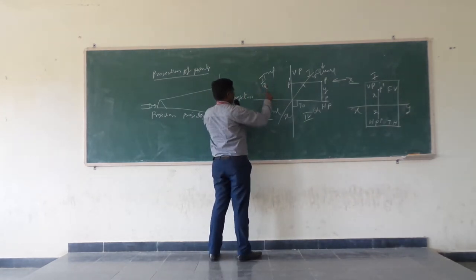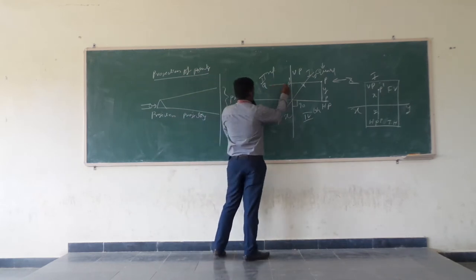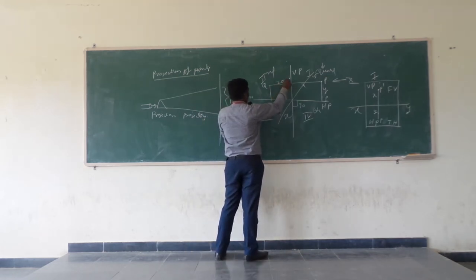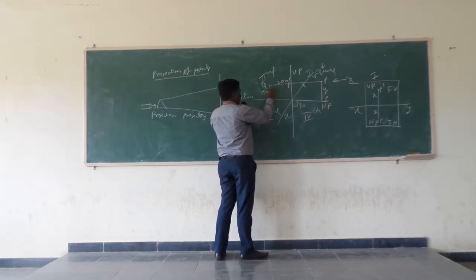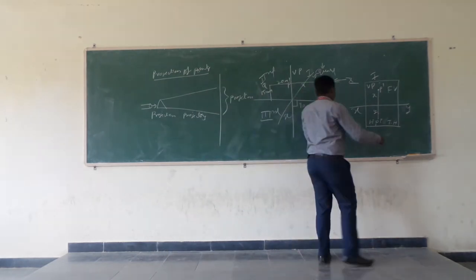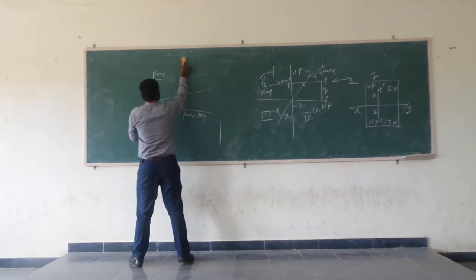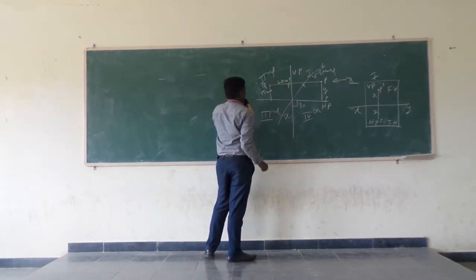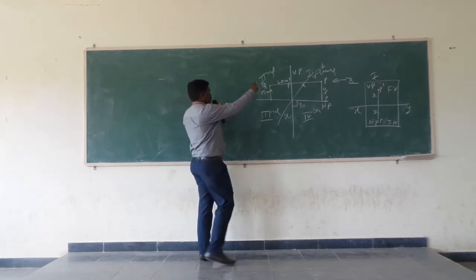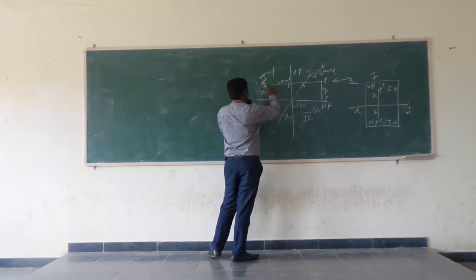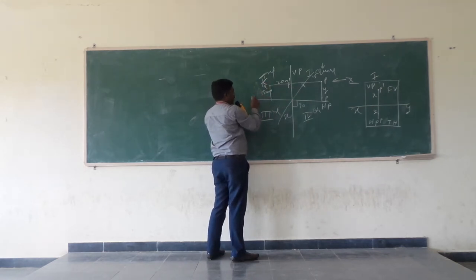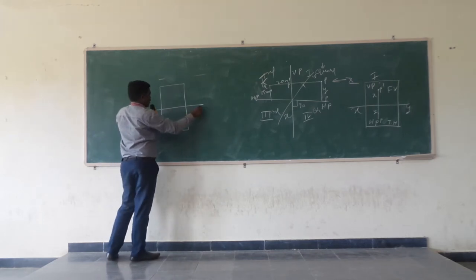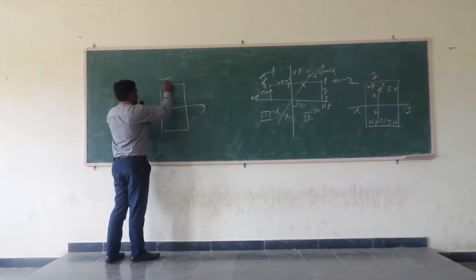Suppose you take point Q in the second quadrant — how it will be represented. Point Q is at a distance of 20 mm from the vertical plane and 15 mm from the horizontal plane. We will be drawing the projections of point Q in the second quadrant on a drawing sheet. The problem is: a point Q is 20 mm from the vertical plane and 15 mm from the horizontal plane, in the second quadrant. We will be considering point Q as behind the vertical plane and above the horizontal plane.